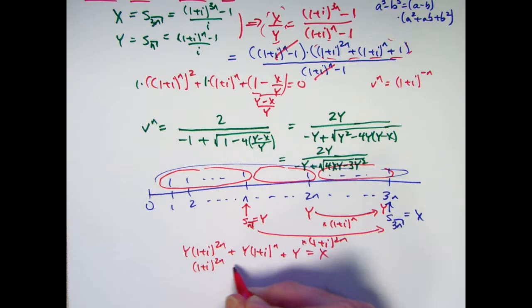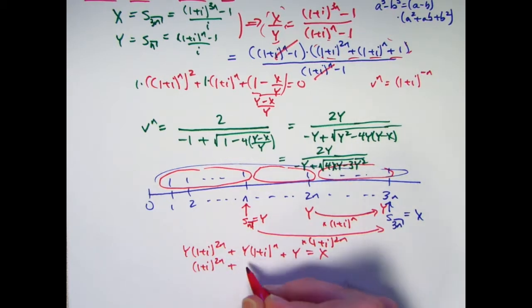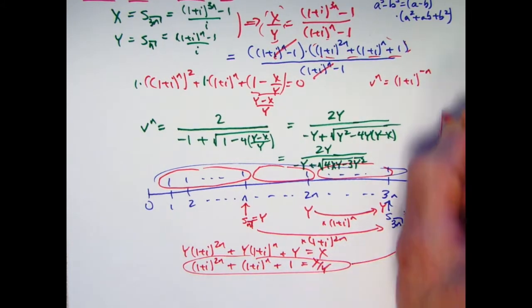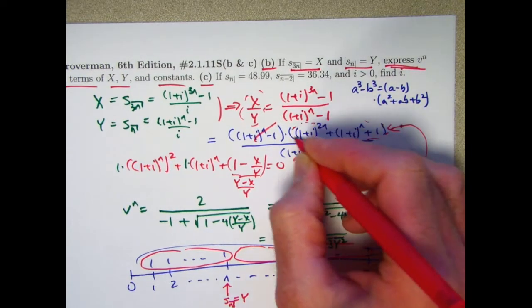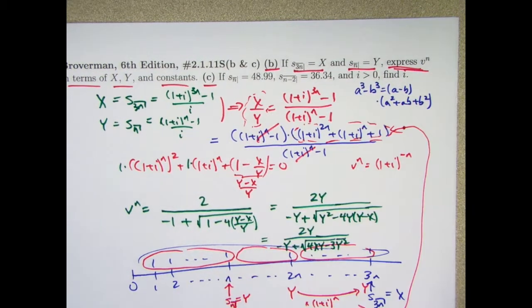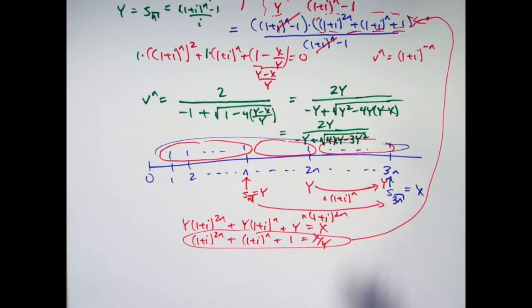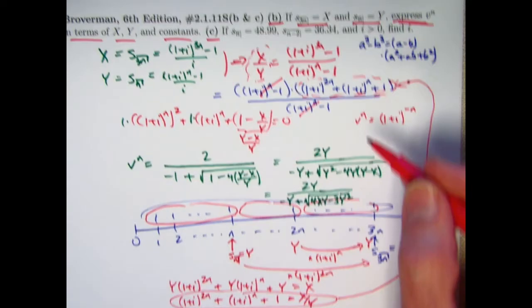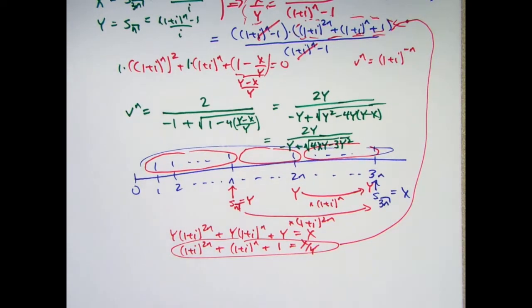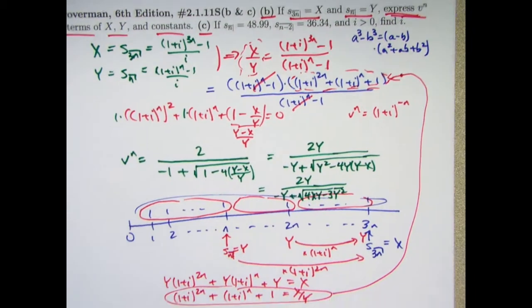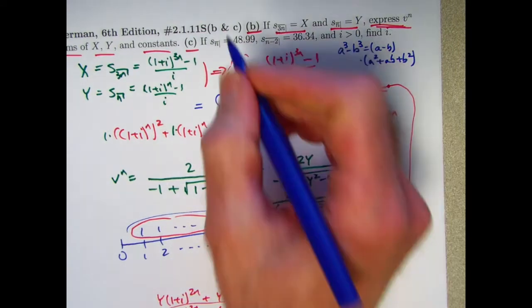So we can write y times 1 plus i to the 2n plus y times 1 plus i to the n plus y equals x. If we now divide everything by y, we can write that as 1 plus i to the 2n plus 1 plus i to the n plus 1 equals x over y. And this quadratic is really the same thing that we got up here. It's the same quadratic. We use the quadratic formula again to solve ultimately for v to the n again. So it's an alternative way to do it. You know, I guess you might say this way was quicker. However, this approach is certainly important for actuaries and you may want to get plenty of practice with this.